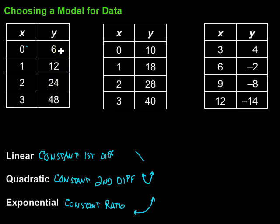I think it's multiplication. 6 times 2 is 12, so we're going times 2. 12 times 2 is 24, and 24 times 2 is 48. Well, which of our models has that type of situation? Exponential. We have a constant ratio, so that's an exponential situation.